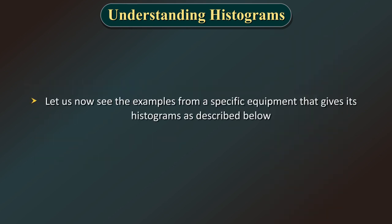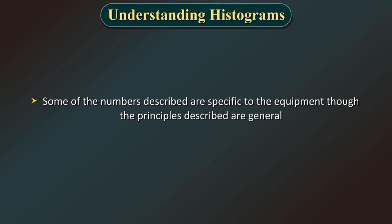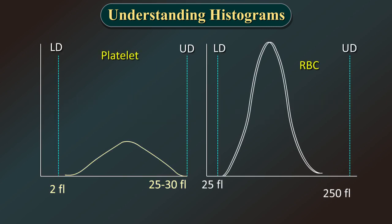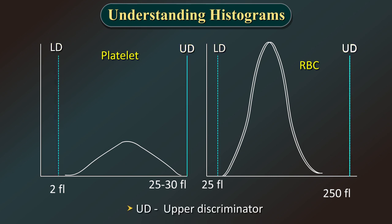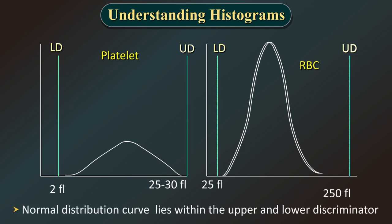Let's now see examples from specific equipment. Some numbers described are specific to the equipment, though the principles are general. The platelet bell curve lies between 2 FL and 25 FL — the size range where platelets fall. The RBC bell curve lies between 25 and 250 FL. The dotted lines demarcating these areas are called discriminators. Each histogram has a defined lower discriminator (LD) and an upper discriminator (UD) based on cell size, and the normal distribution curve lies within these discriminators.